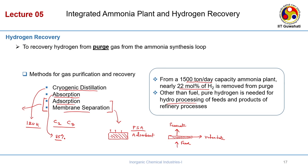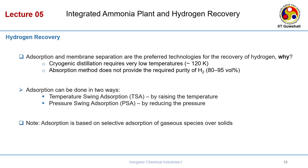We will focus on pressure swing adsorption specifically. Cryogenic distillation requires very low temperatures — around minus 150 degrees Celsius, which is 120 Kelvin. This is very difficult because it requires compression costs and cryogenic facilities. The absorption process does not provide high purity; maximum purity you get is 80 to 95 percent.